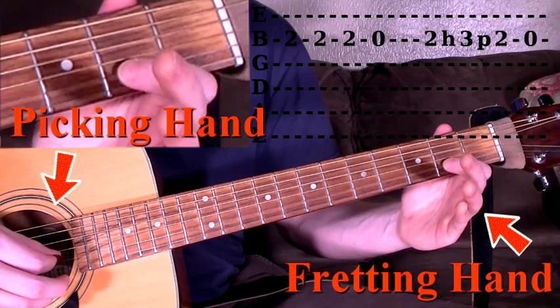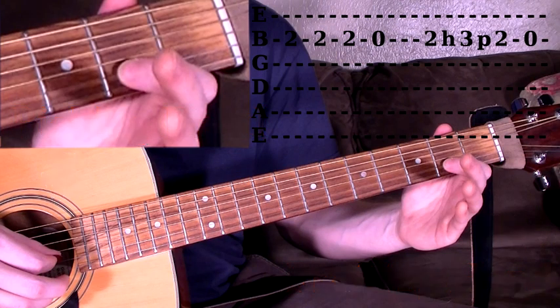To do this, you will pluck the first note and then, using a different finger on your fretting hand, you will literally hammer-on to the next note. In this example, we will pluck the second fret of the B string and hammer-on to the third fret like so.